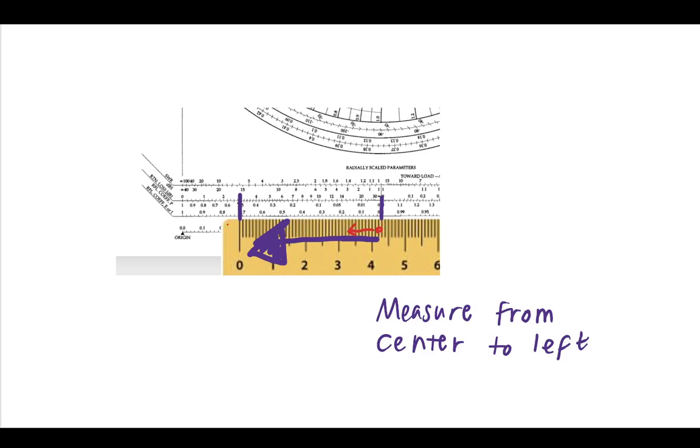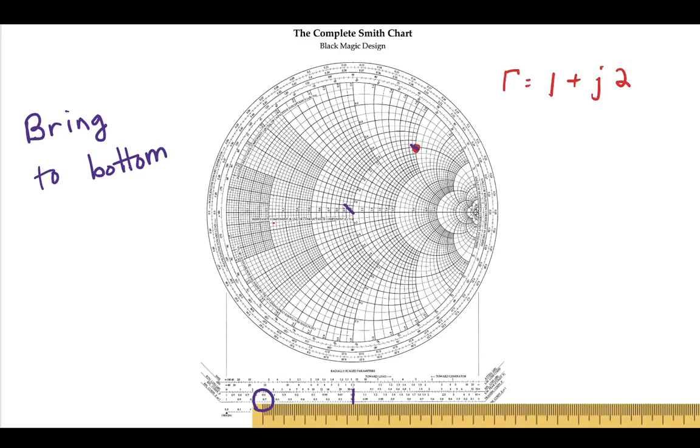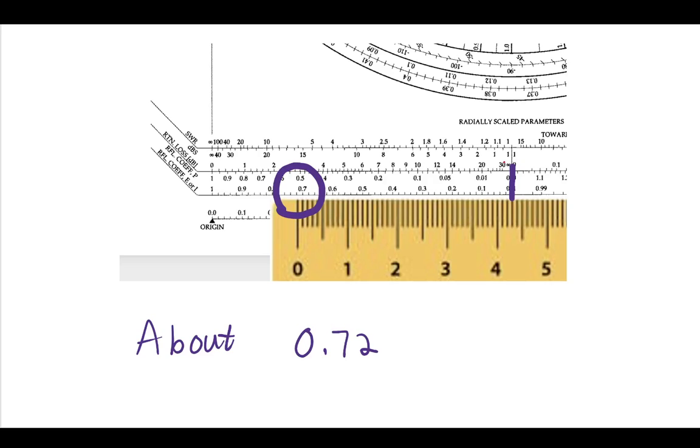And so doing this, we can go all the way to the left, and we can see that that distance gives us the magnitude. And that magnitude, in our case, looks like it is about 0.72. And that's just approximate.